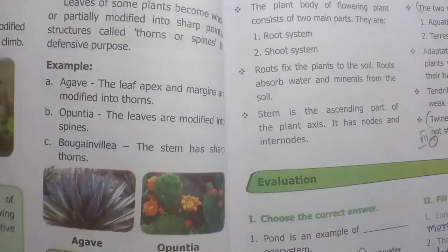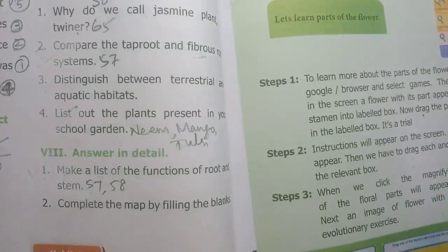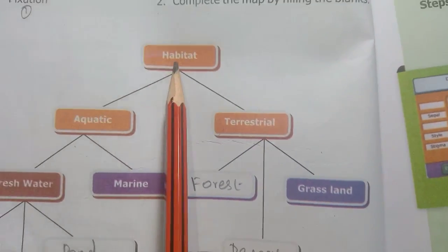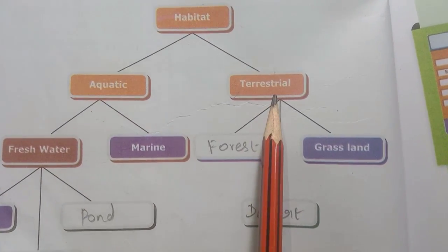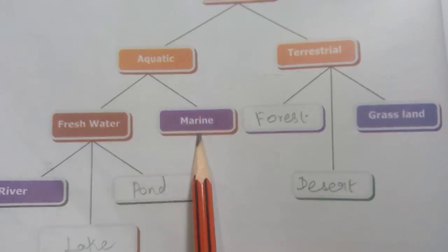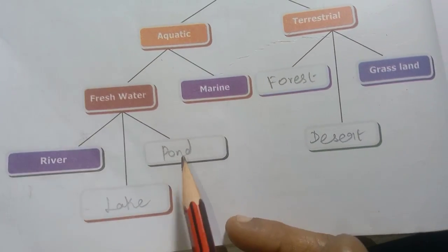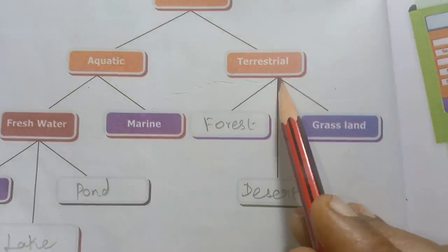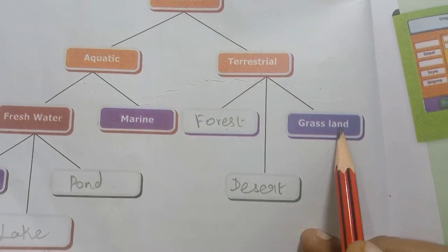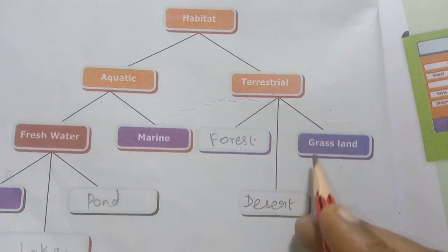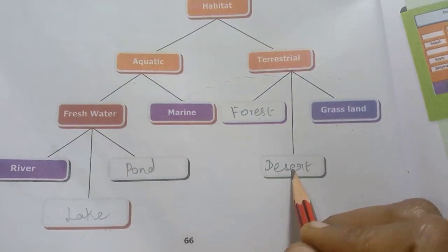Second: Complete the map by filling in the blanks. Habitat is divided into aquatic habitat and terrestrial habitat. Aquatic habitat includes freshwater and marine. Freshwater includes river, pond, and lake. Terrestrial habitat includes forest, grassland, and desert. This completes the book back exercise for this lesson.